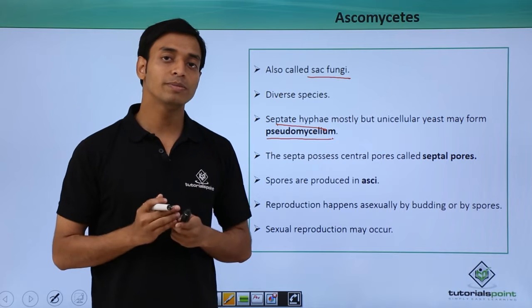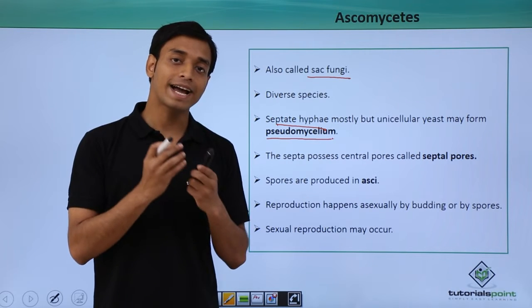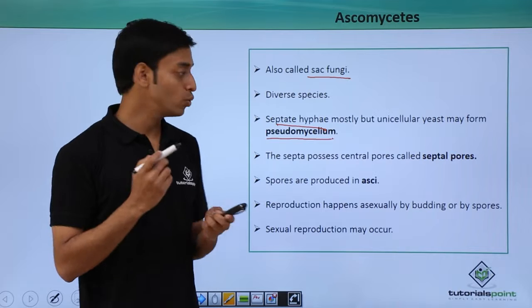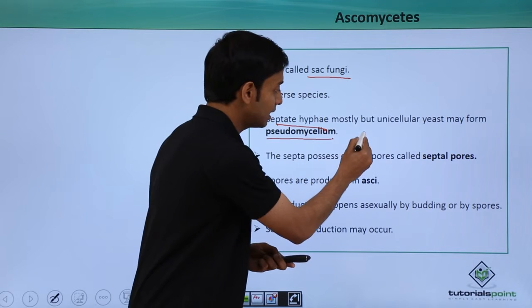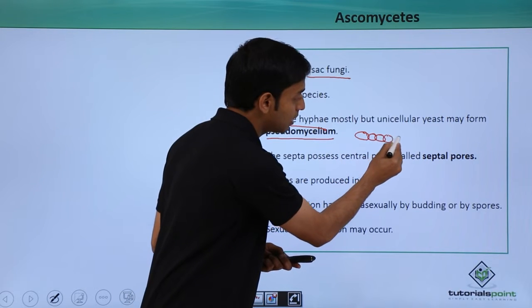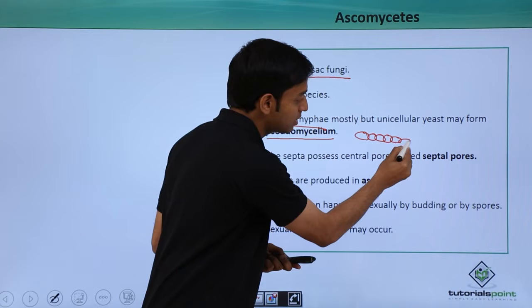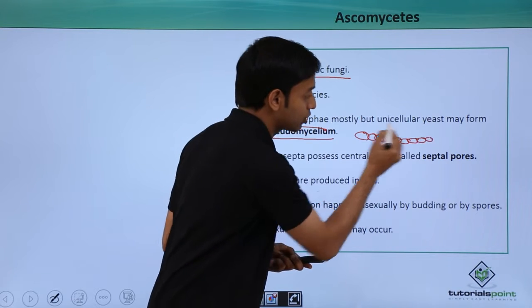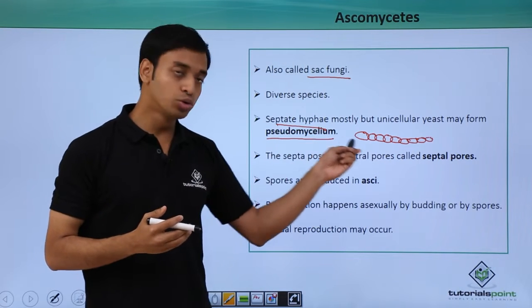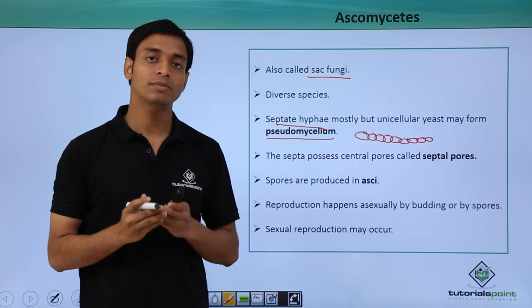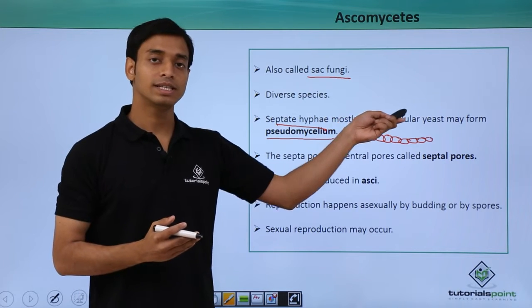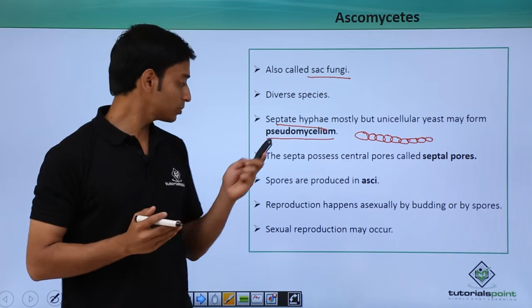These unicellular yeast may have structures known as pseudomycelium. They are not actually like that of true hyphae or mycelium — instead, yeast cells keep dividing and form mycelium-like structures, which is why they are known as pseudomycelium.